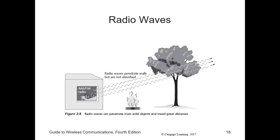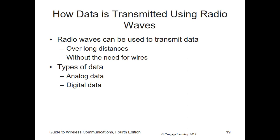Radio waves can be used to transmit data over long distances without the need for wires. The method by which radio waves transport data involves several concepts that will help you better understand wireless technologies — including how interference can affect transmissions, transmission speed, reliability issues, and how to troubleshoot and resolve some of these problems. We start by discussing how analog and digital data can be transmitted via radio waves.